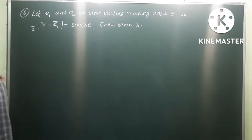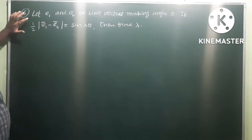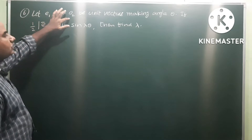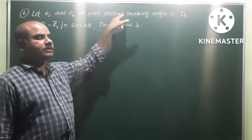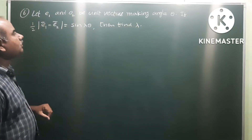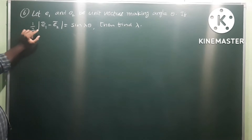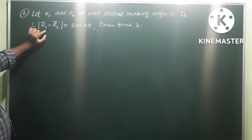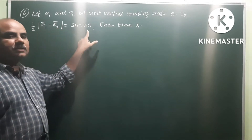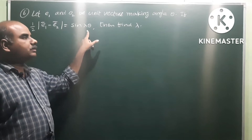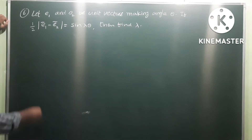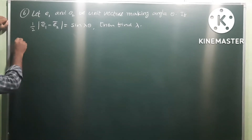Okay, sixth problem. Let e1 and e2 be unit vectors making angle theta. If half modulus of e1 minus e2 is equal to sin(lambda*theta), then find lambda. Let us see the solution.